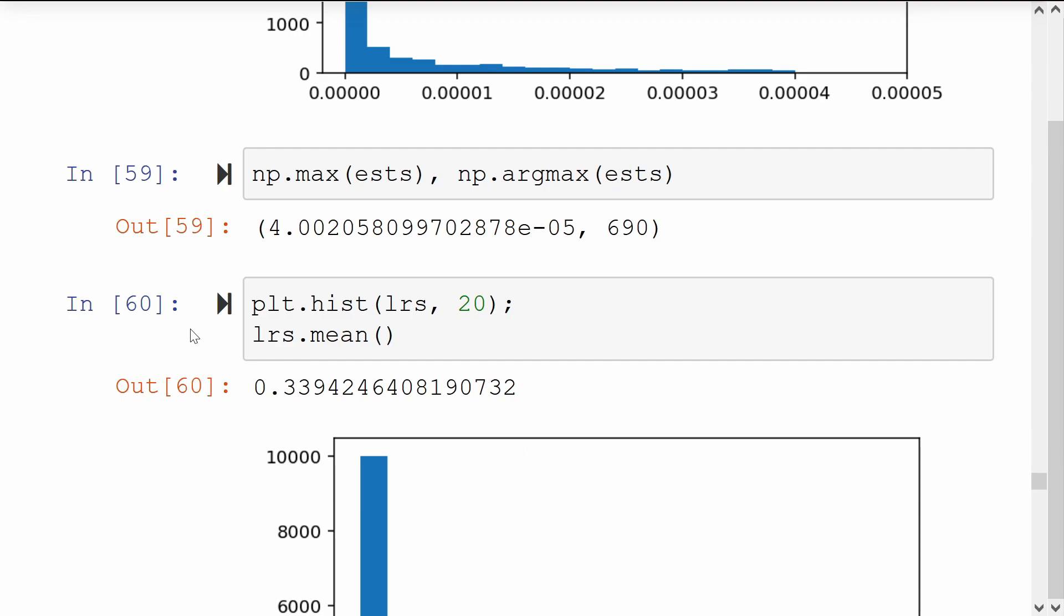This particular importance sampling scheme gave us individual estimates between 0 and 4 times 10 to the minus 5, with the largest estimate being the 690th estimate.